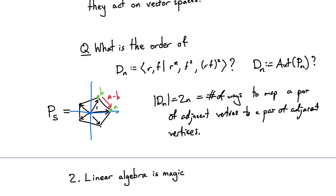Part two is called 'Linear Algebra is Magic.' I'm going to list some results that are true and that we'll be able to show using representation theory — using the magic of linear algebra to deduce things about representations of finite groups, and then use those observations to learn things about the finite groups themselves.